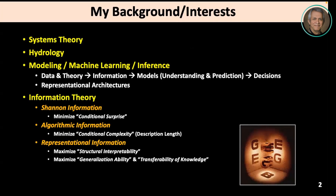I'll mention briefly what my background and interests are. Everything has been informed by my interest in information theory and conversations we've been having in this group. When we talk about information theory, we traditionally think first about Shannon. I'm going to condense Shannon information down to one sentence: you want to minimize the conditional surprise. Conditioned on all of my knowledge of physics, patterns, or whatever — once I take all that out — what's left is the part that's unpredictable, and you want that to be as small as possible. That's what we think of as surprise.